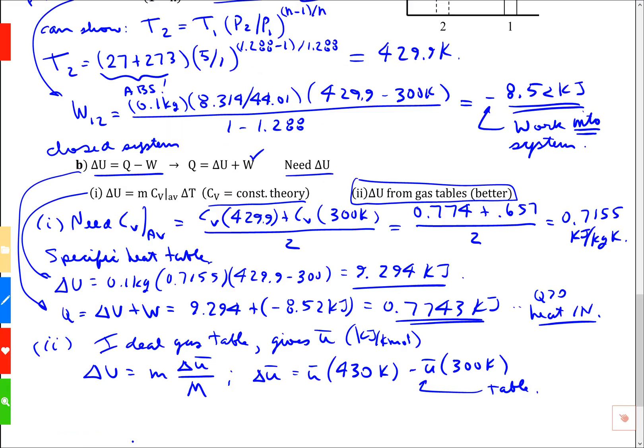Let's transfer those numbers across. Delta u bar is the value at 430, which was 11053, minus the value at 300, which is 6939. That's 4114 in kilojoules per kilomole.